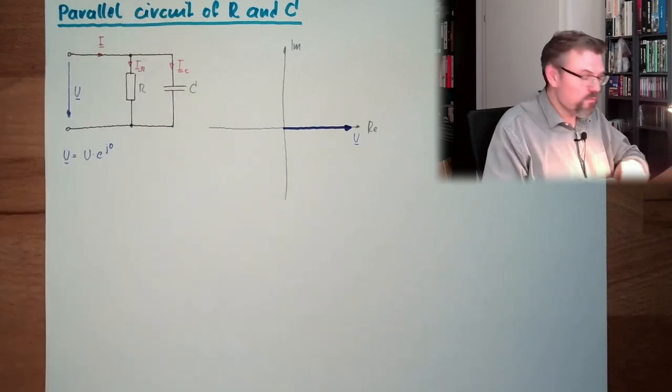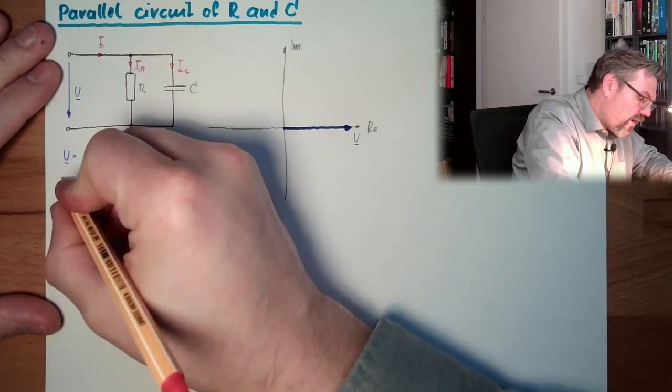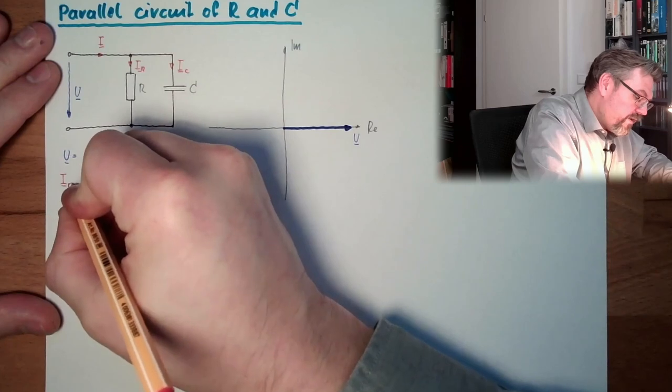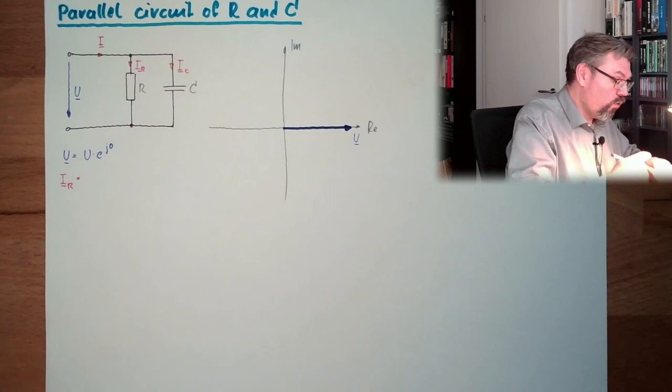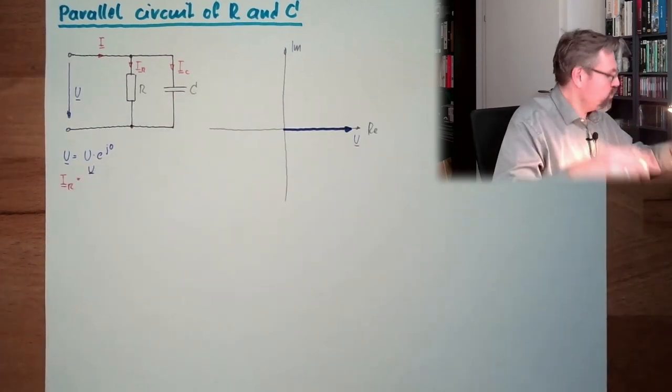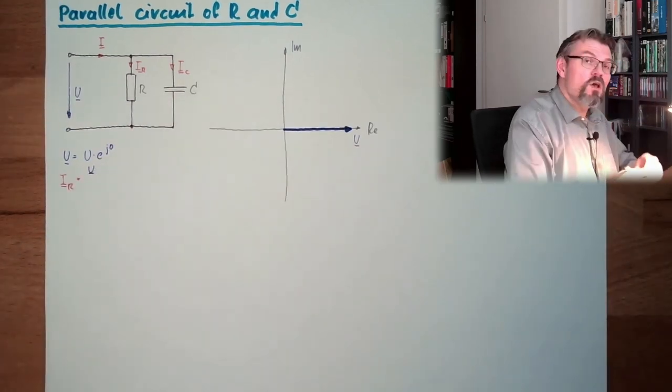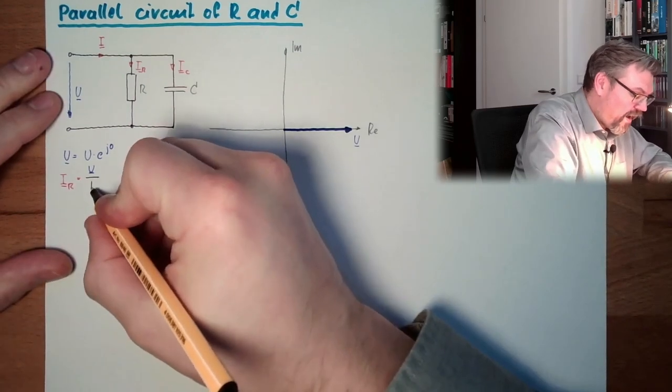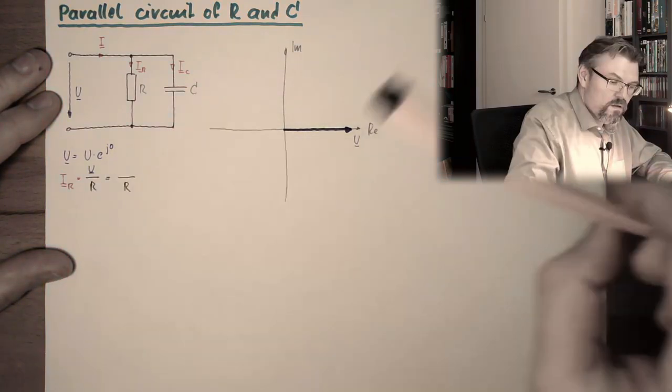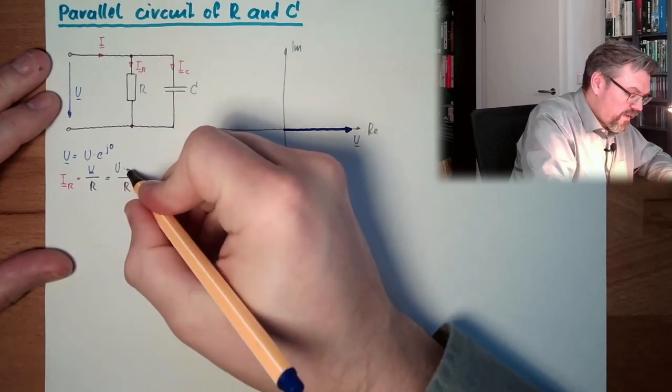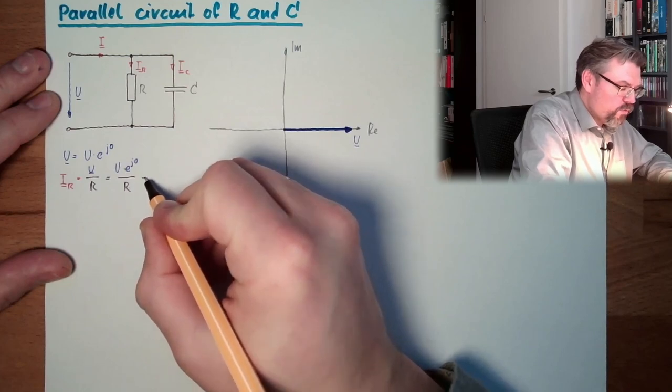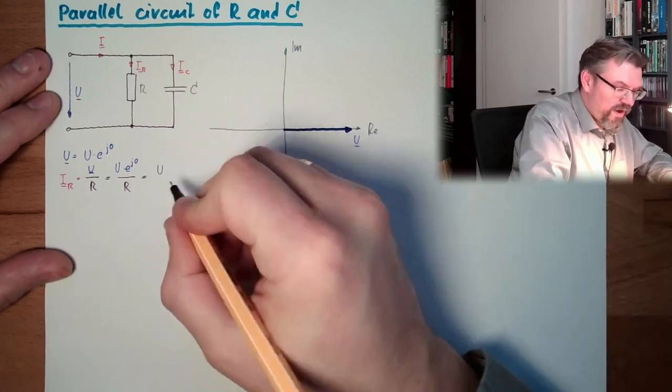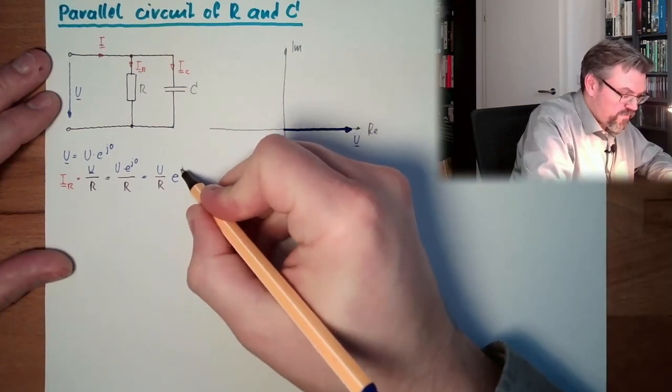Let's start again with the most simple one, our IR, our current at our resistor, which is according to Ohm's law, which is by the way important, I am not sure if I have already mentioned it. U divided by R. So we have here U raised by e^(j0). This is e^(j0) divided by R. So we have here U divided by R, and then we have e raised by the power of j zero.